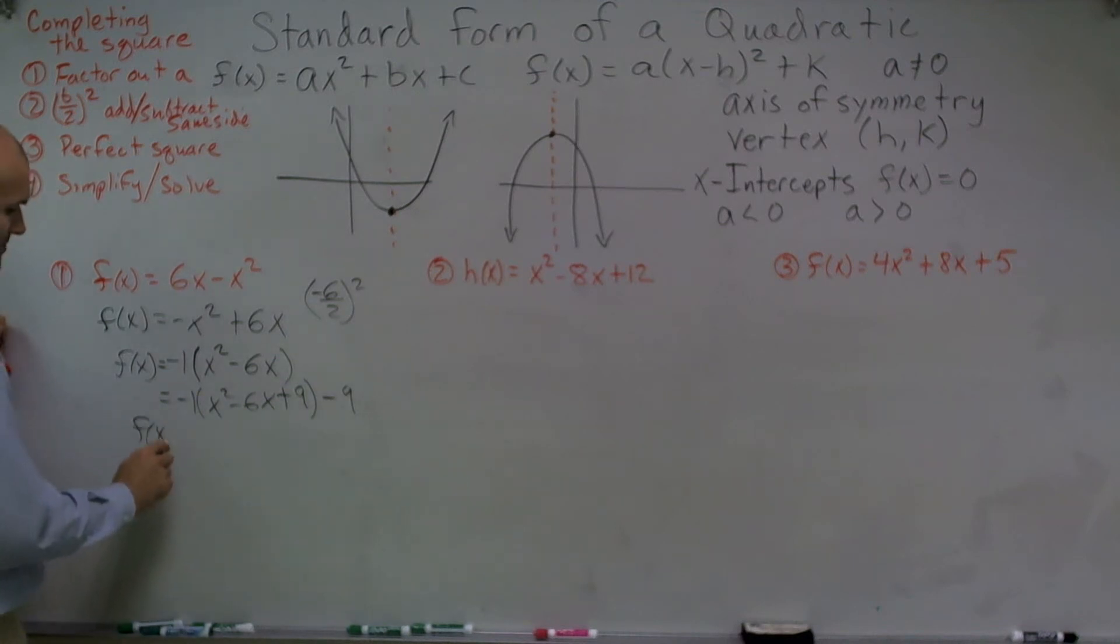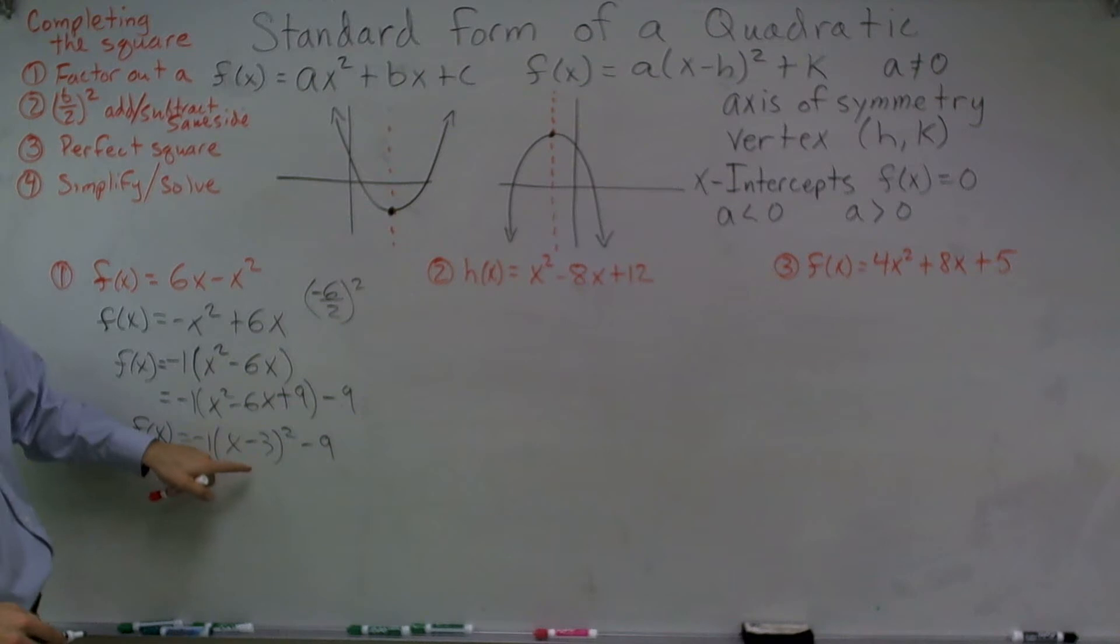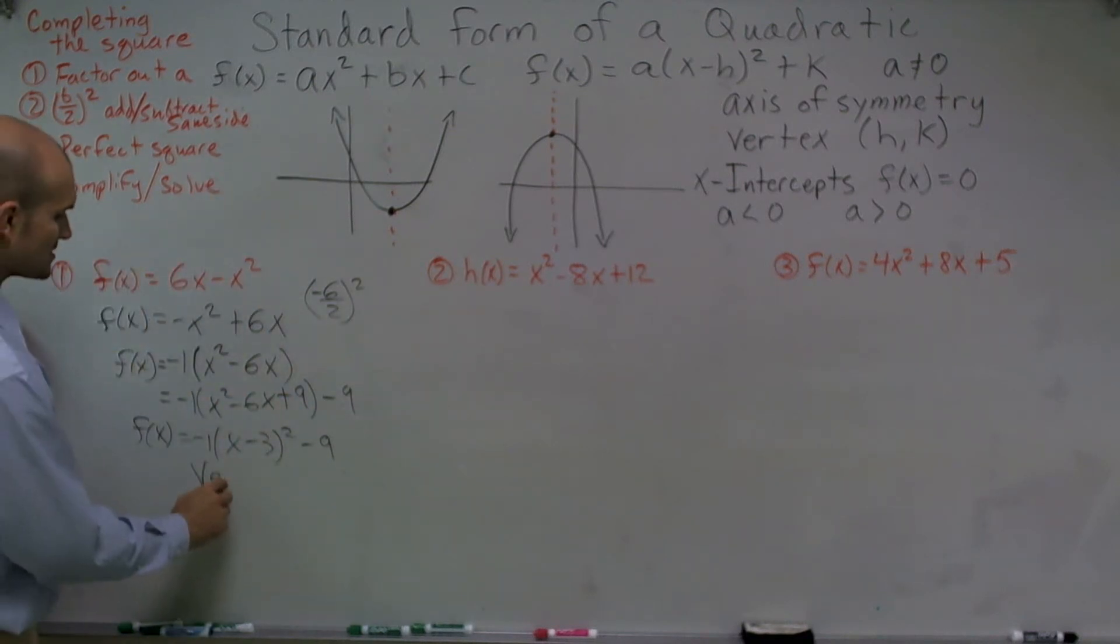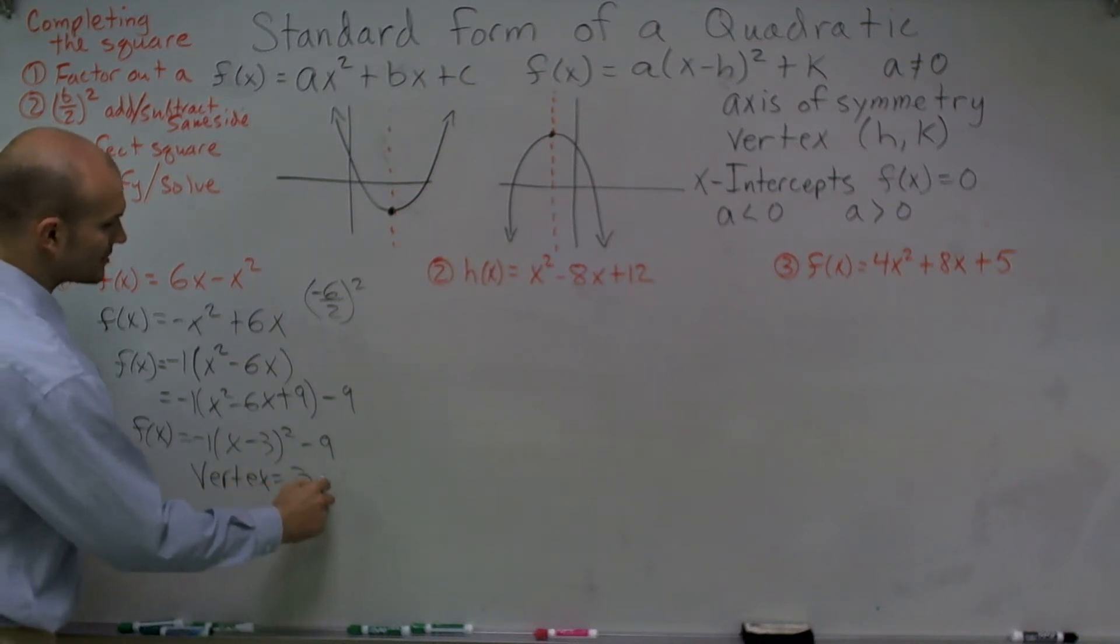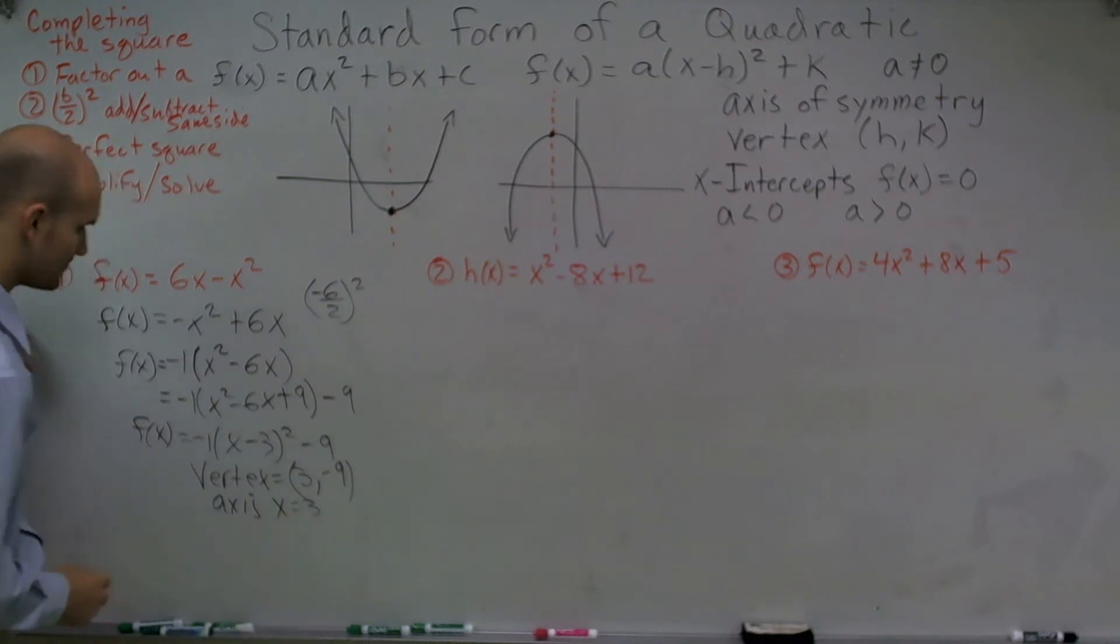So I can say f(x) = -1(x - 3)² - 9. Now, my equation is in standard form. So I can say my vertex equals 3, -9. My axis of symmetry is when x = 3. And then I need to find the zeros.